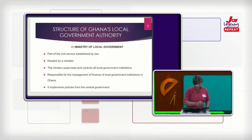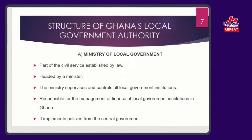Let's now look at the structure of Ghana's local government authority. Because it is an act of parliament, as well as a bid to bring governance to the local people, there is a Ministry of Local Government. Currently in Ghana, this particular ministry is known as the Ministry of Local Government, Decentralization, and Rural Development. It carries the same weight as what I have outlined. So we talk about the Ministry of Local Government — it is part of the civil service established by law.